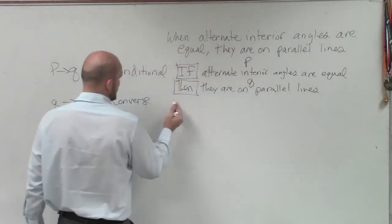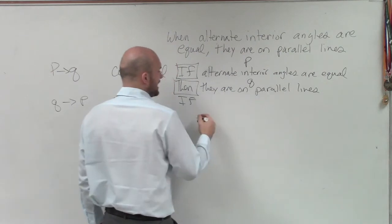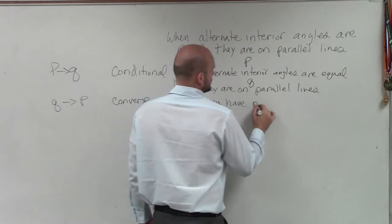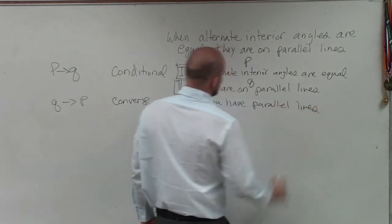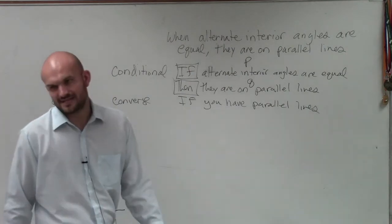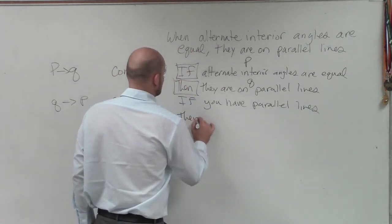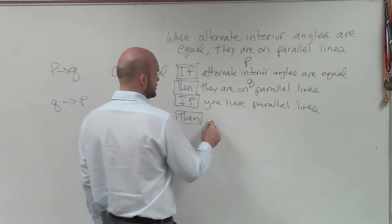So the way that reads is if they are parallel lines. I'll just say you have parallel lines, because if they are parallel lines doesn't really make sense. So if you have parallel lines, then alternate interior angles are equal.